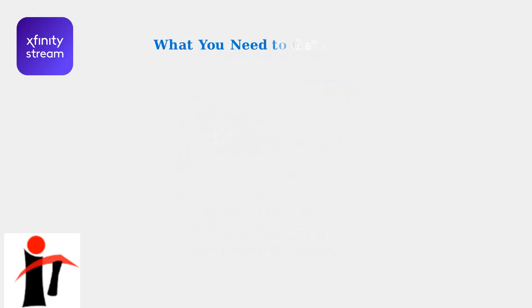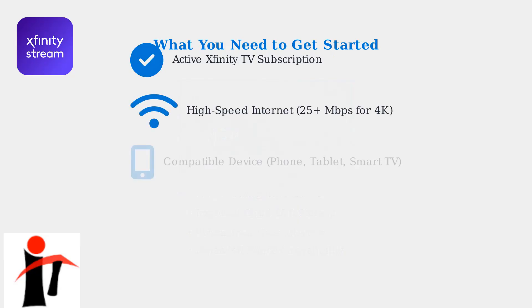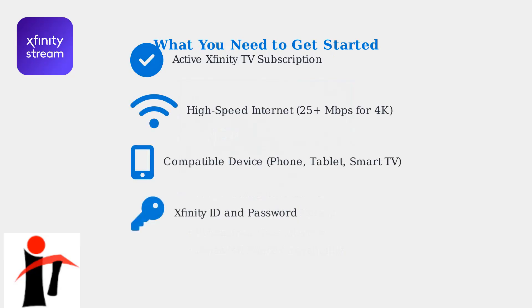To get started with Xfinity Stream, you'll need four essential items. First, an active Xfinity TV subscription. Second, a high-speed internet connection with at least 25 megabits per second for 4K streaming. Third, a compatible device such as a smartphone, tablet, computer, smart TV, or streaming device. And finally, your Xfinity ID and password for account access.